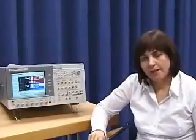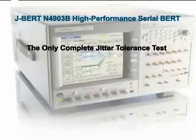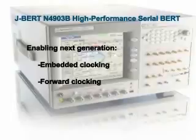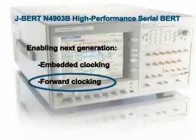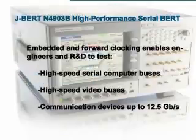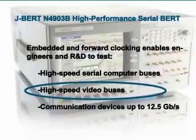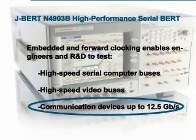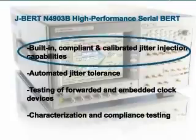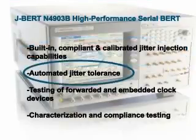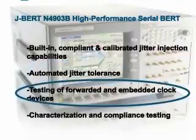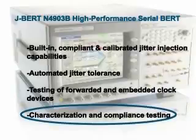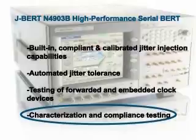Now I would like to summarize the key benefits of the Jaybird N4903B. It's the only complete jitter tolerance test solution which enables the next generation of embedded and forwarded clock devices. This tool allows R&D engineers to test high-speed serial computer, video, and communication devices up to 12.5 gigabit. The Jaybird has built-in, compliant, and calibrated jitter injection capabilities. It allows automated jitter tolerance testing, supports testing of forwarded and embedded clock devices, and can be used throughout the characterization phase and compliance testing of new devices.